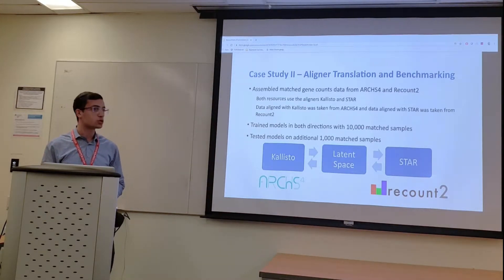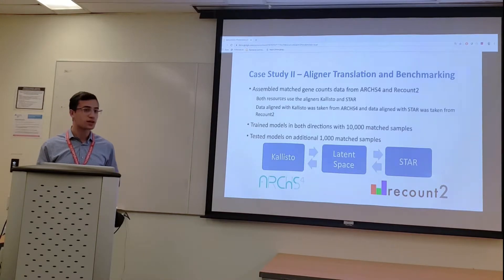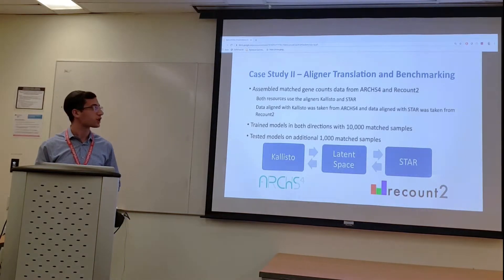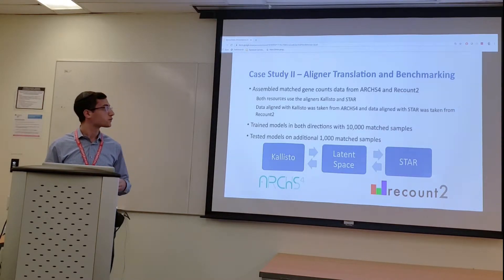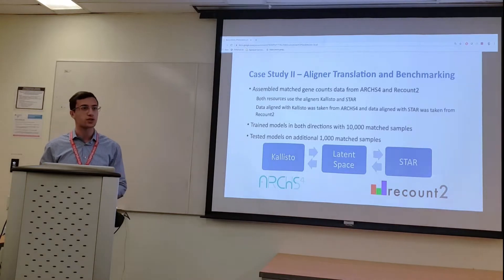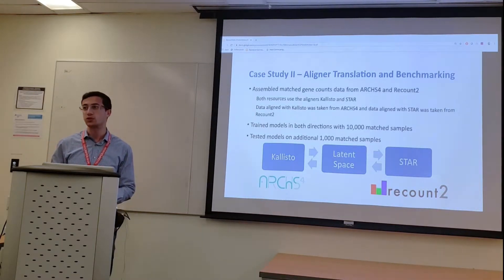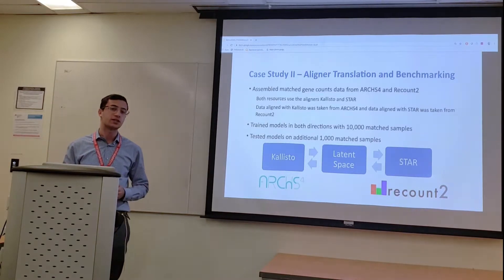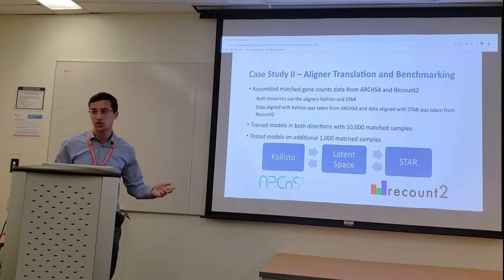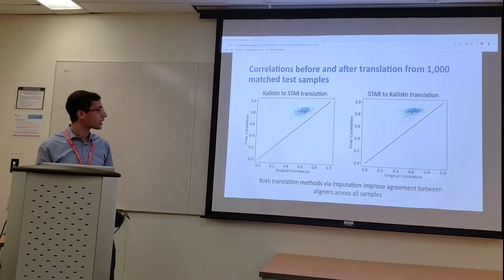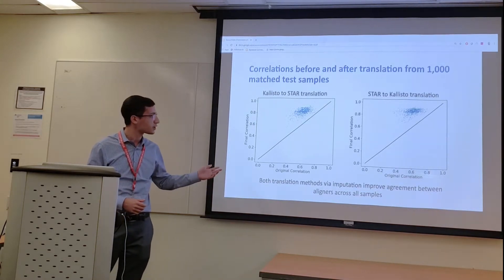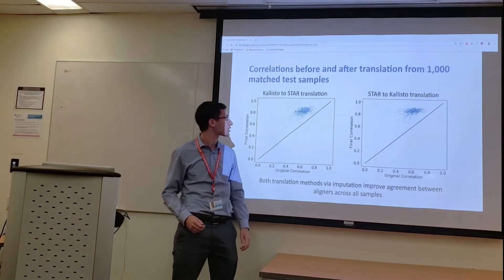The second application which AE-Impute was tested on was aligner translation and benchmarking. Data samples aligned with Kallisto in ARCHS4 and also aligned with STAR in another online resource, Recount2, were used for training and testing. Two AE-Impute models were trained on 10,000 matched samples. The first model was trained to translate samples aligned with Kallisto into a predicted STAR representation. After training, testing was done on 1,000 additional matched samples. The models were shown to improve the correlation between the two aligners across all 1,000 samples. The left figure shows the Kallisto-to-STAR translations and the right figure shows the STAR-to-Kallisto translations.